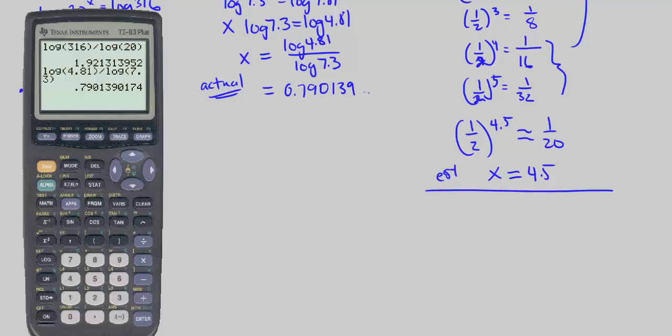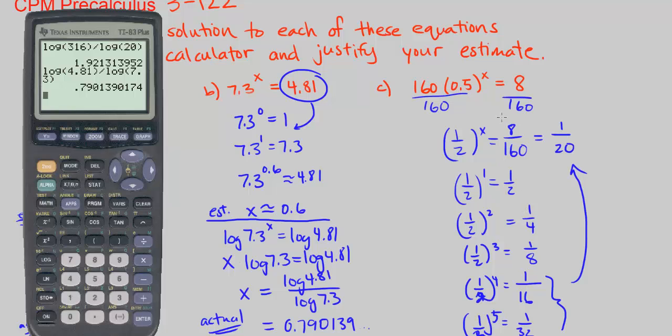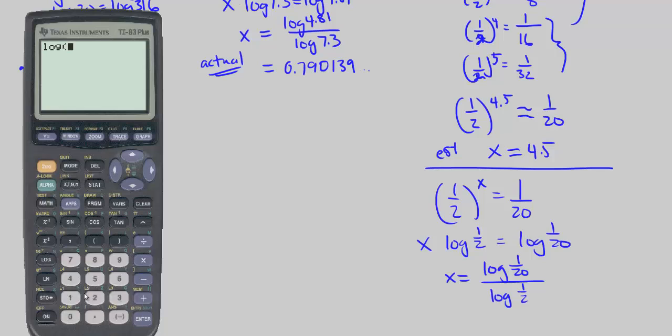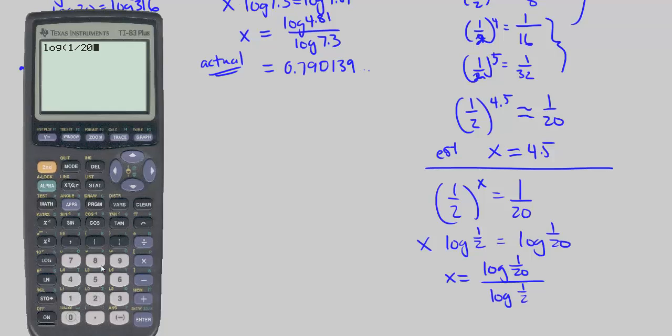Let's get the actual. I'm going to start here at 1 half to the power of x equals 1 20th. Take log of both sides. We get x times log of 1 half equals log of 1 20th. Let's solve for x by dividing both sides by log of 1 half. We can plug this into our calculator. Log of 1 20th divided by log of 1 half. And we get actual value for x is 4.321928.